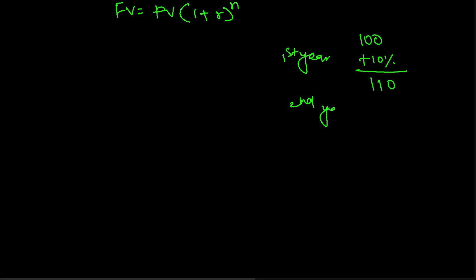In the second year, again it will grow at the rate of 10 percent on a compounding basis, so this 10 percent is calculated on 110. So 10 percent of 110 is 11, and 11 plus 110 gives you 121.